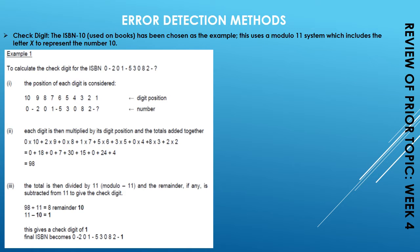You can put the digit position from right to left or from left to right. In the exam, an example will always be given — you need to comprehend that example and follow the steps provided to calculate the check digit. In step two, each digit is multiplied by its digit position and the totals are added together, giving us a total of 98.